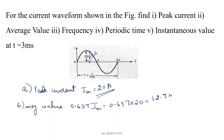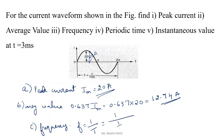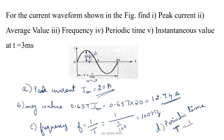To find frequency: f = 1/T. The periodic time T is directly given from the figure as T = 1/100 s, so frequency f = 1 ÷ (1/100) = 100 Hz. Periodic time T = 1/100 seconds.